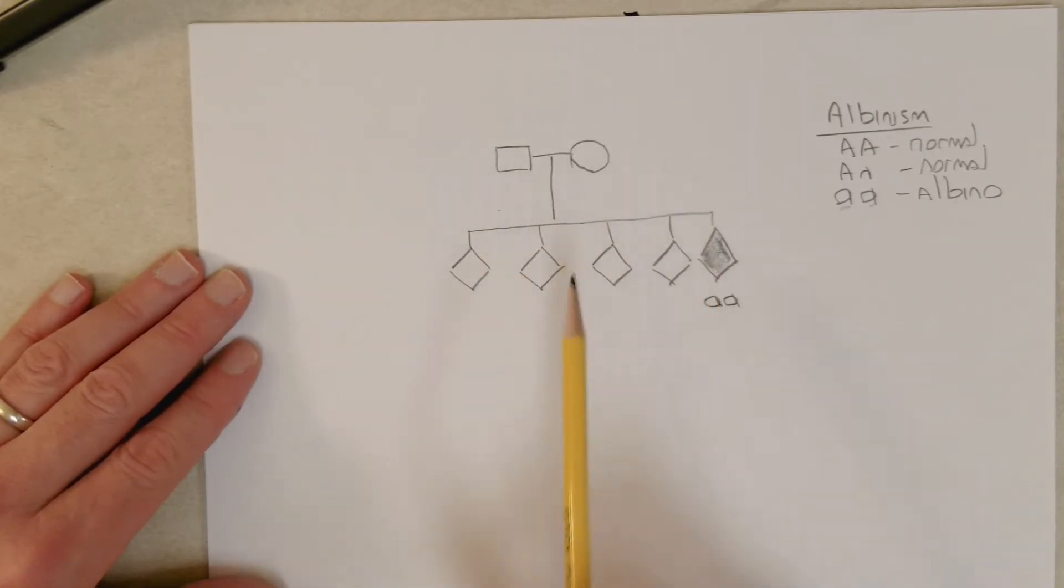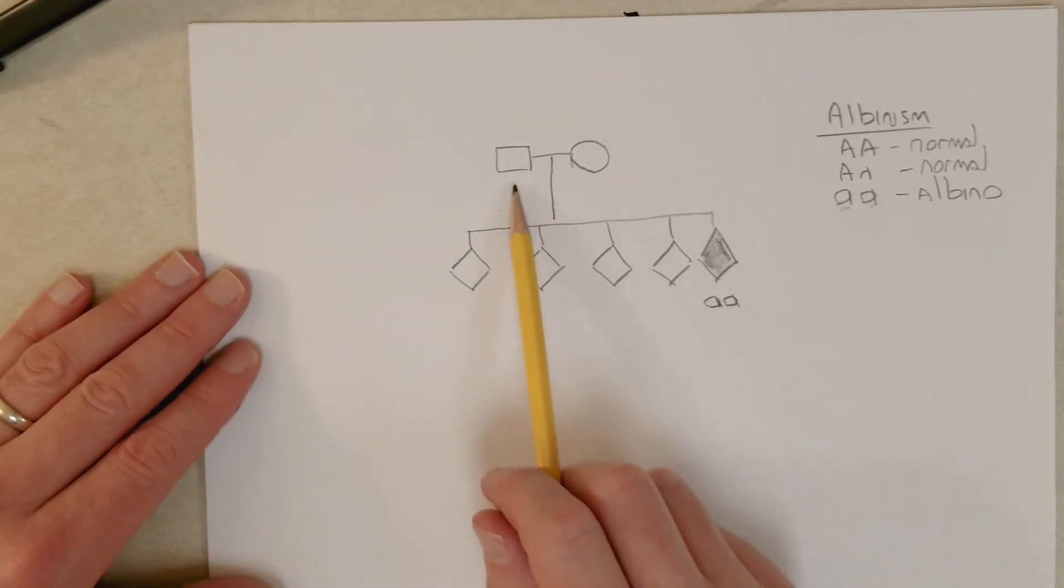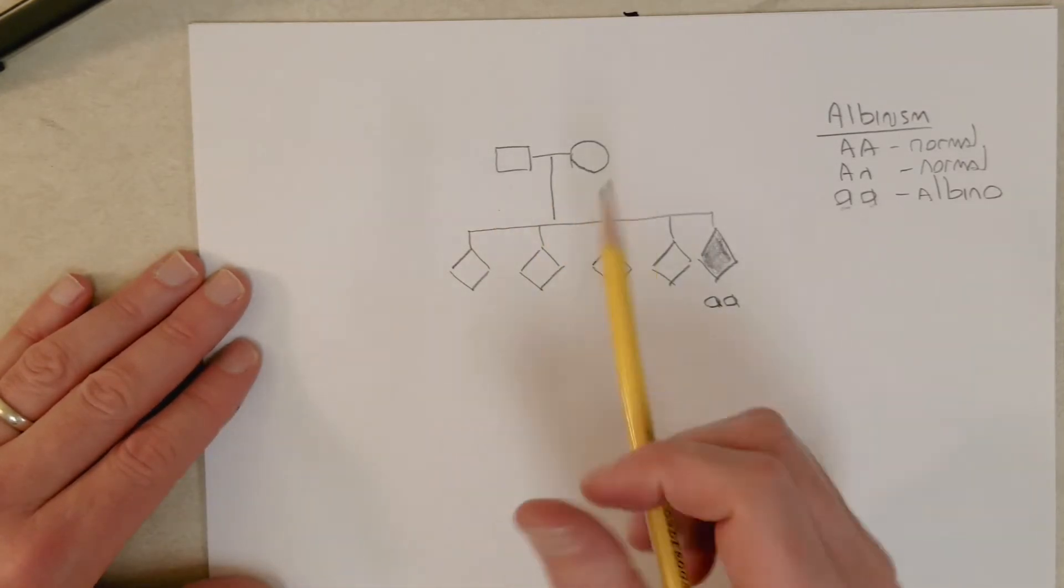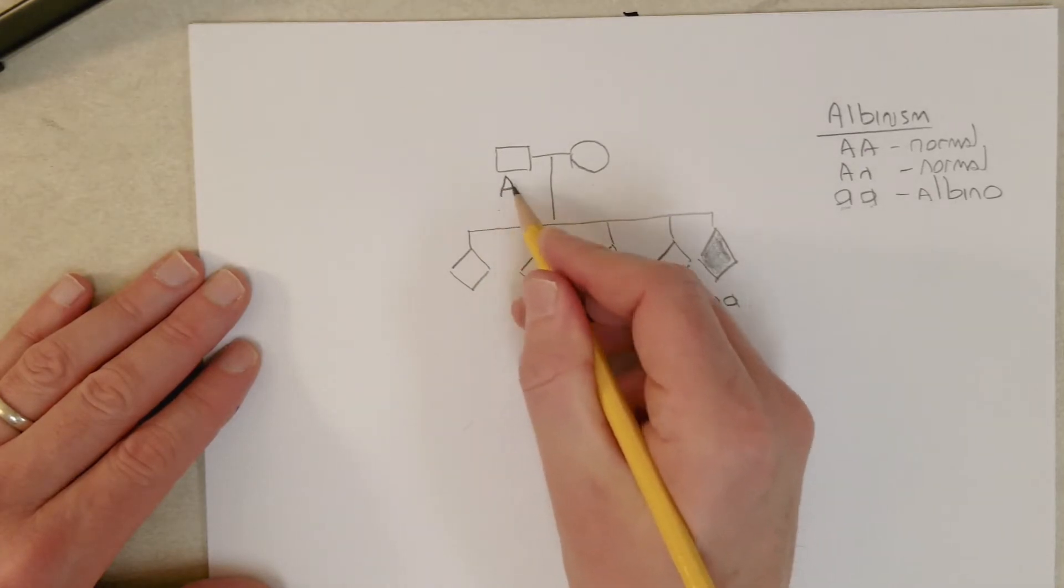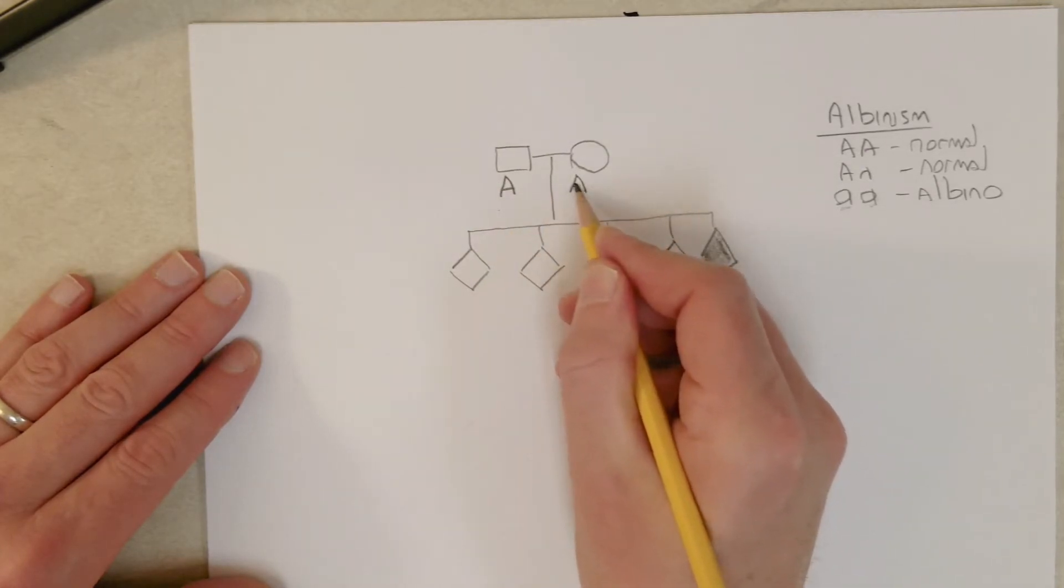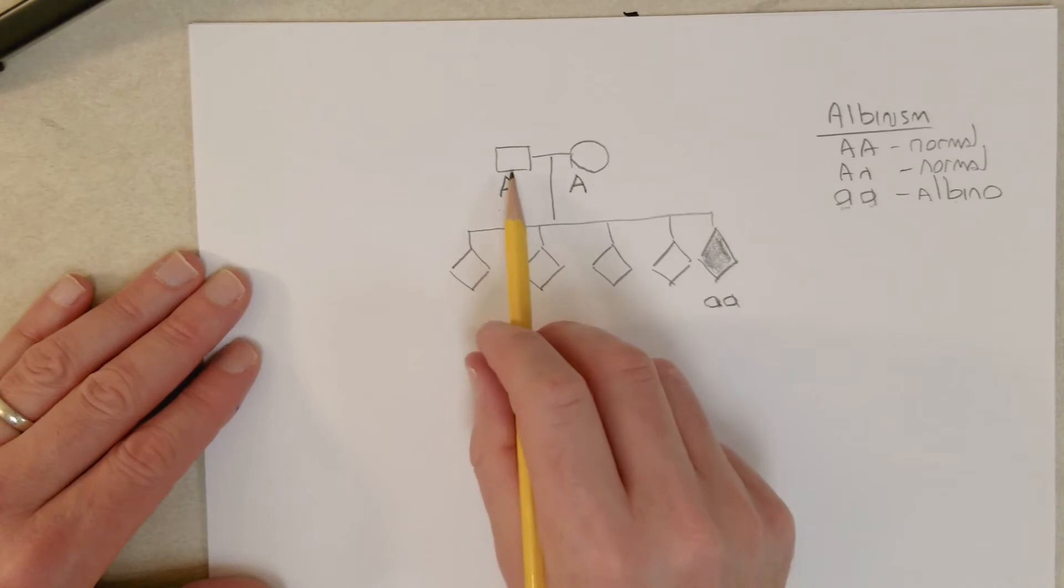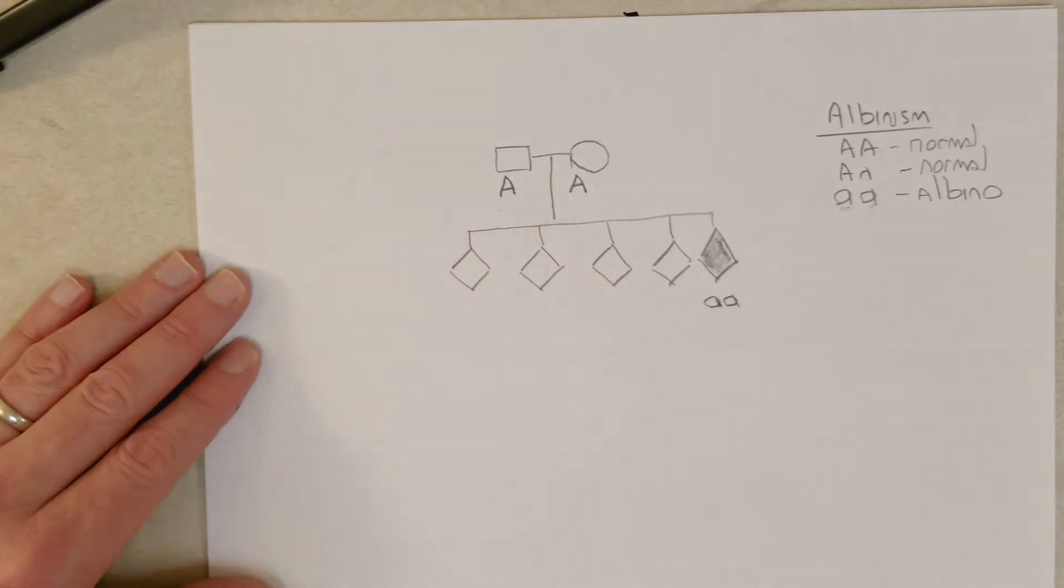Well, we can figure out the parents, right? The parents are normal, that means they do not have albinism, and they have to have at least one big A allele because that's the dominant allele.